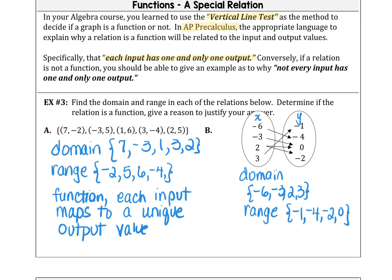Is the relation a function? And if you look at it carefully, you can see 2 maps to 0 and 2 maps to -2. So our relation is only a relation, it is not a function, based on our definition of a function. You can see in our notes here, if a relation is not a function, we can say the reason why is not every input has one and only one output value.